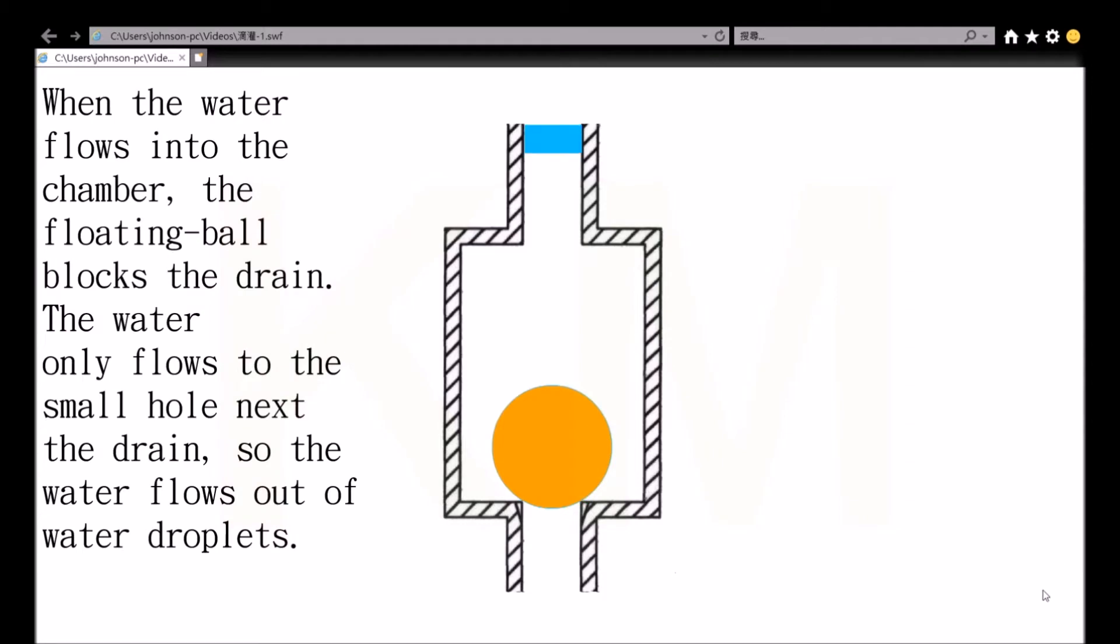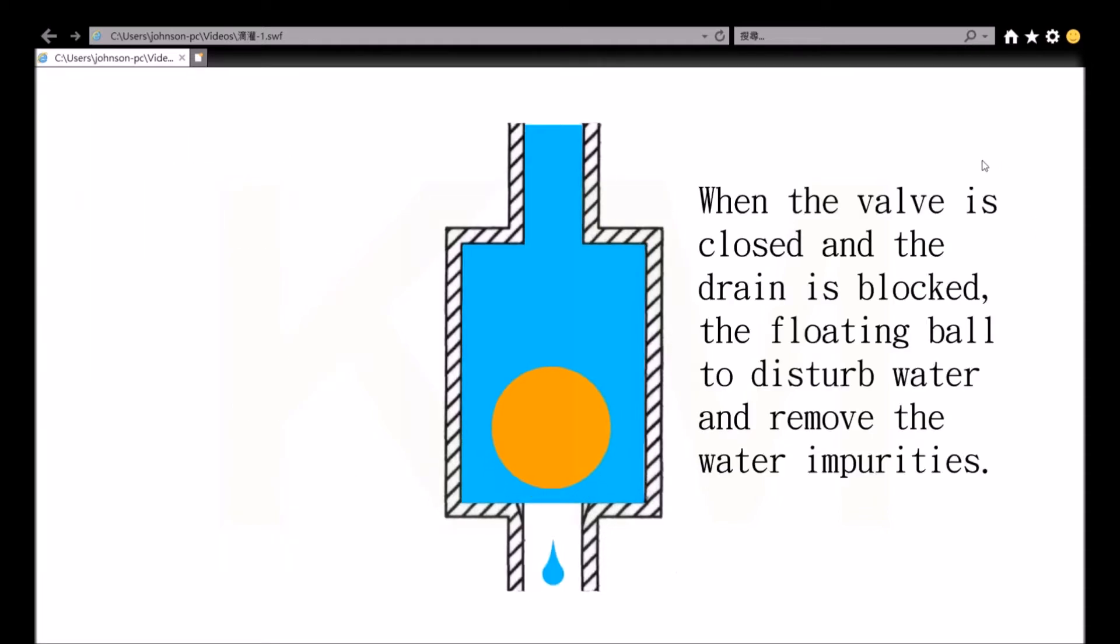When the water flows into the chamber, the floating ball blocks the drain. The water only flows to the small hole next to the drain, so the water flows out as water droplets.